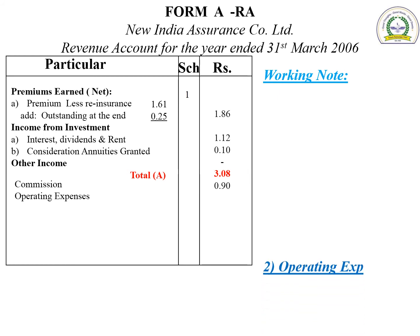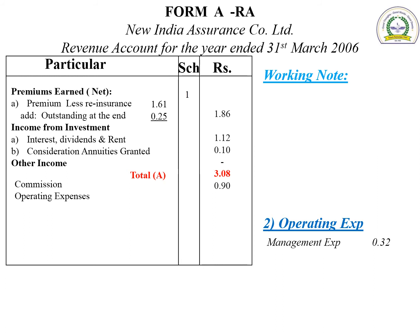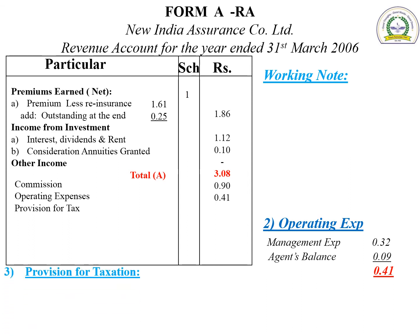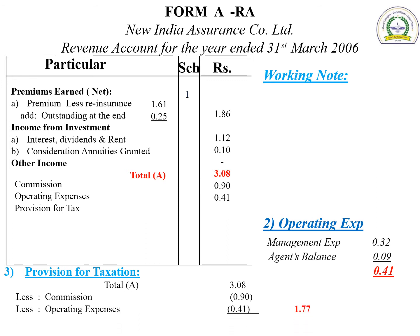Commission is 0.90. Working note for operating expenses: management expenses from trial balance is 0.32, agents balance 0.09, total is 0.41 — same total put in revenue account. Next, provision for taxation: calculate 35 percent — provision for taxation is 0.62, shown in revenue account. Total B: commission plus operating expenses plus provision for tax equals 1.93.